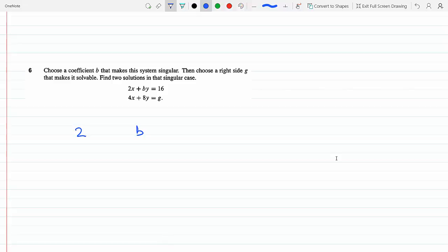My coefficient matrix is 2, 4, 4, 8. The determinant of this matrix has to be zero. The determinant of a matrix is just 2 times 8 minus 4B equals zero, which makes 4B equals 16, which makes B equal 4.